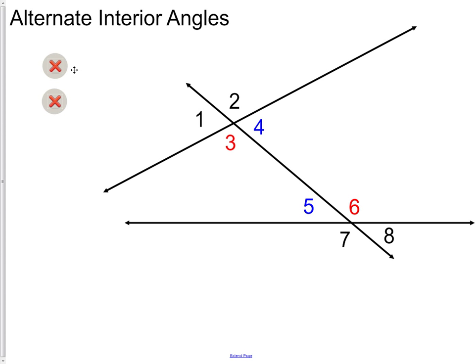Now, alternating, that kind of means back and forth. So when we think of our alternating angles, it would be angles four and five, and also three and six. Angle one and eight are also alternating. However, they are not interior. They would be considered exterior. So we could not call them interior angles.